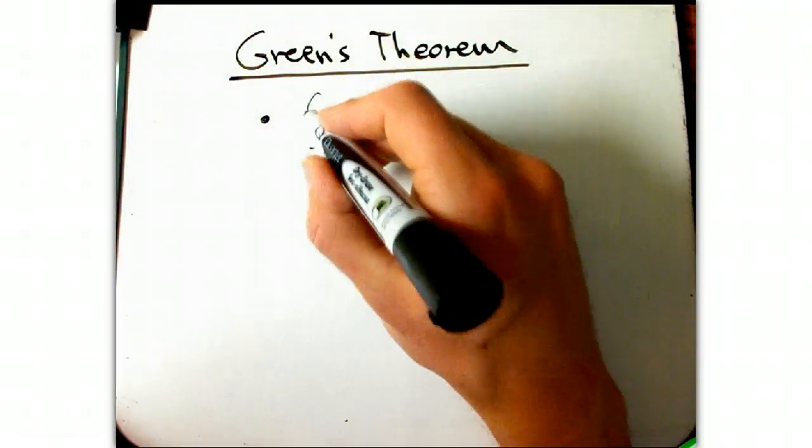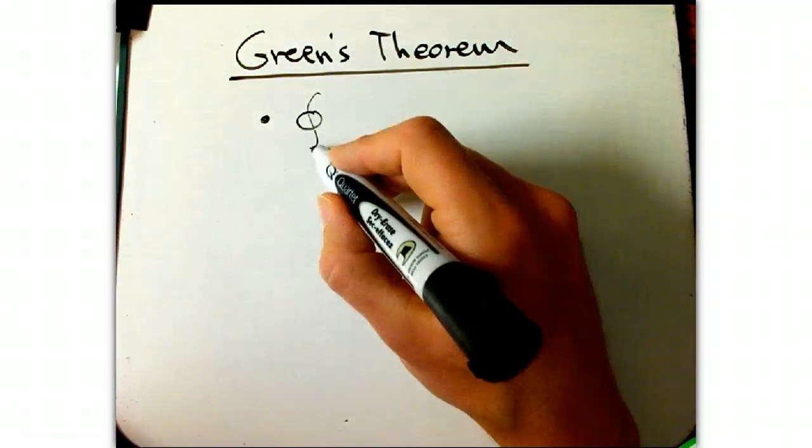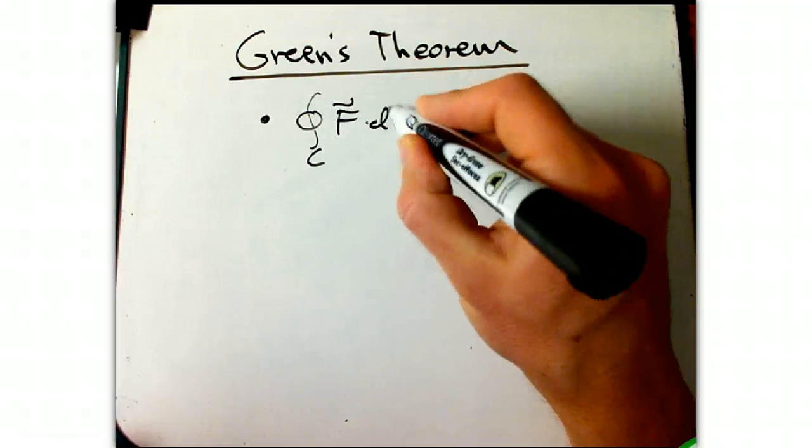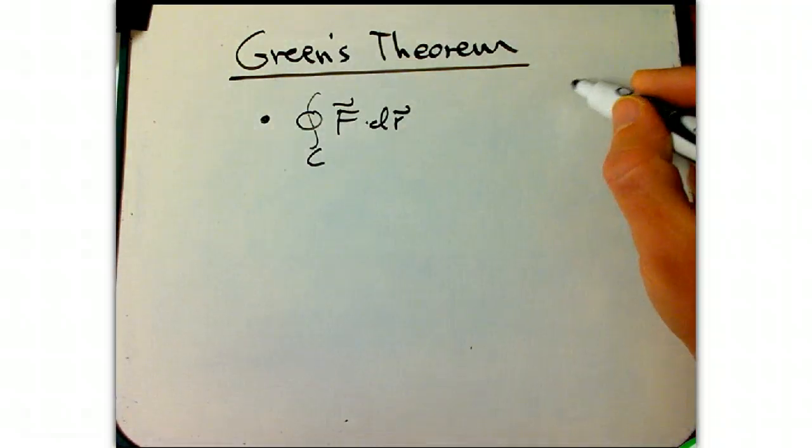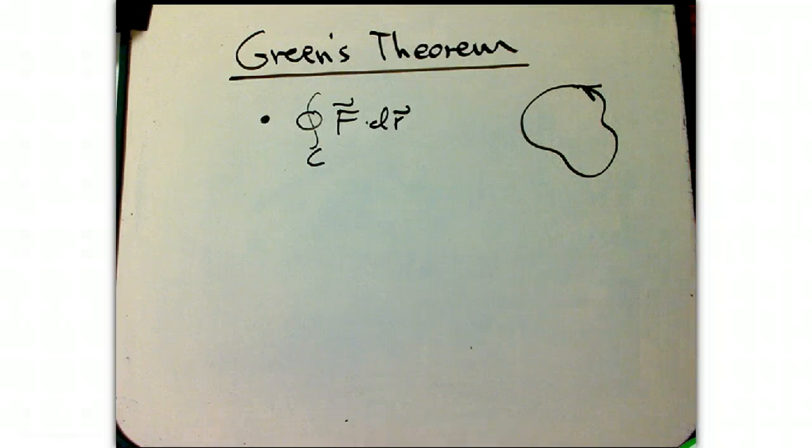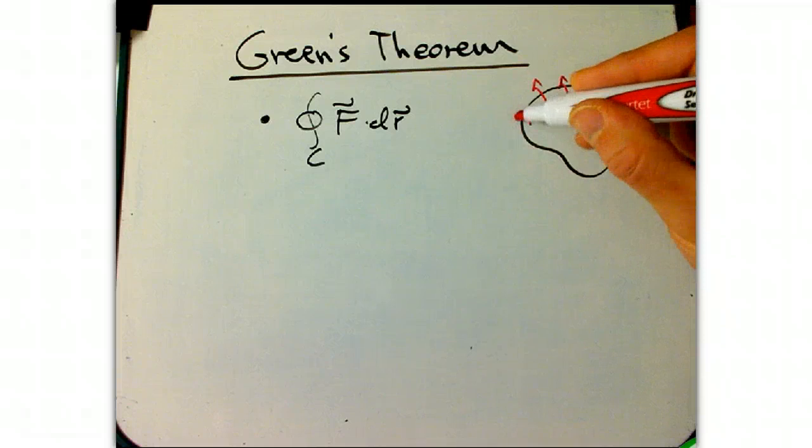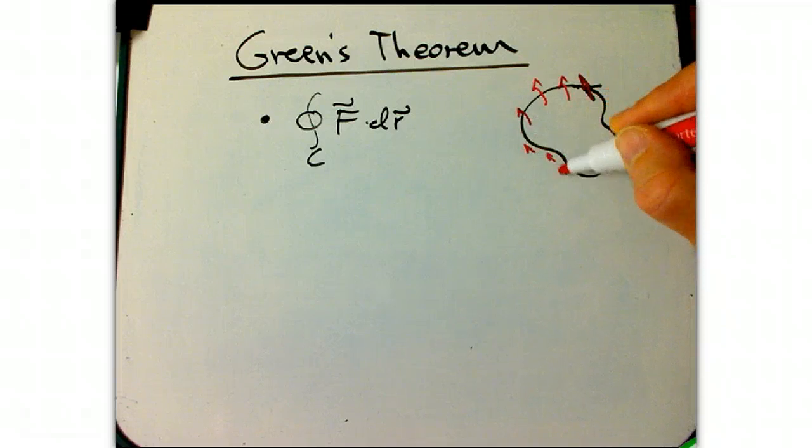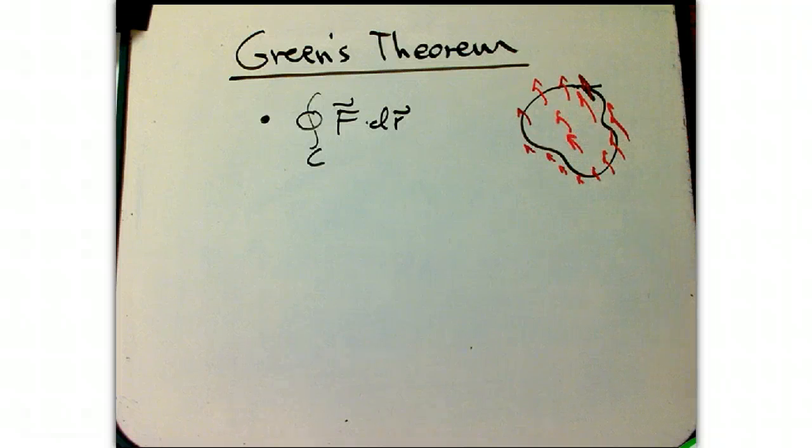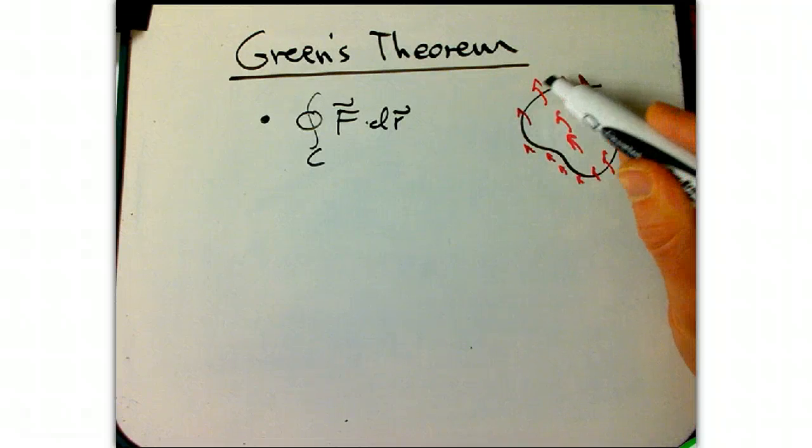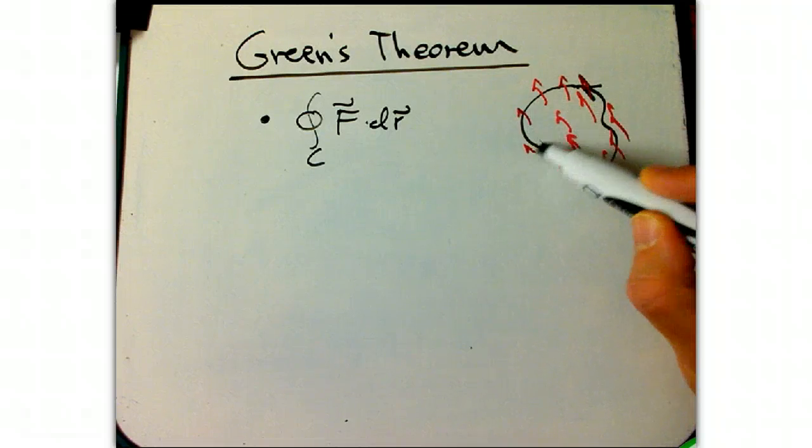The key thing is we're always thinking with this situation about the circulation, the integral around a closed curve, of a vector field. And so here's our closed curve, and we've got some sort of vector field. Maybe it looks like this. And this one, for example, has a positive circulation around this counterclockwise curve, because the arrows are bigger when we're going with them and smaller when we're going against them.